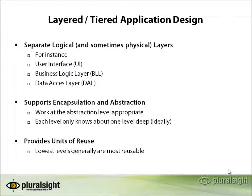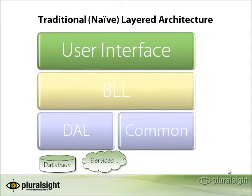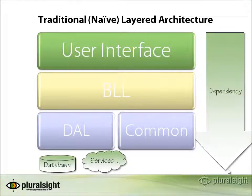This provides a good unit of reuse, but the lowest levels are generally the most reusable because there are many more layers above them than, for instance, a user interface layer, which is typically not reusable and is at the top of the dependency hierarchy. This diagram shows an example of the traditional or naive layered architecture approach with the flow of dependencies going from top to bottom.